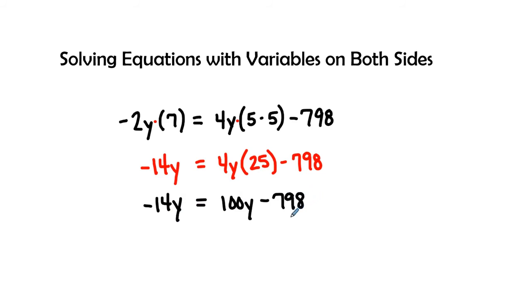So let's go ahead and bring the 100y to the left-hand side. And so I'm going to add a negative 100y to both sides. That will give me a negative 114y equals a negative 798. This becomes 0.